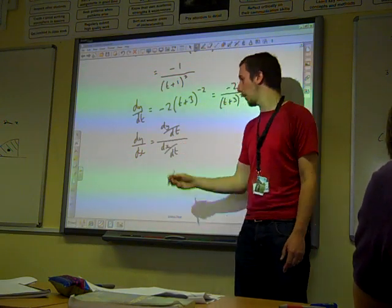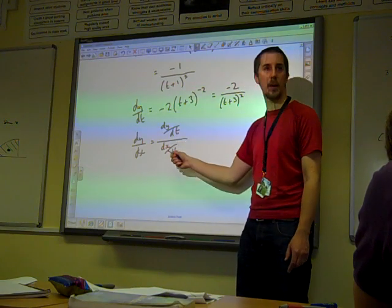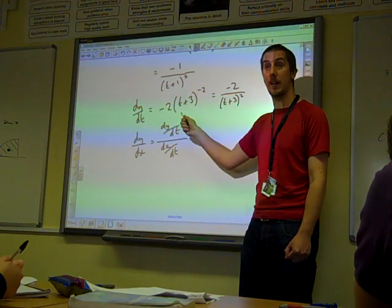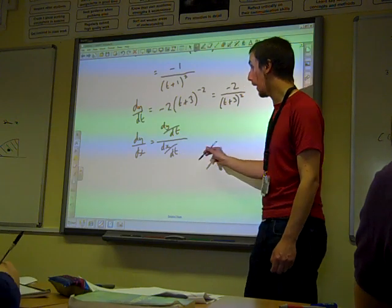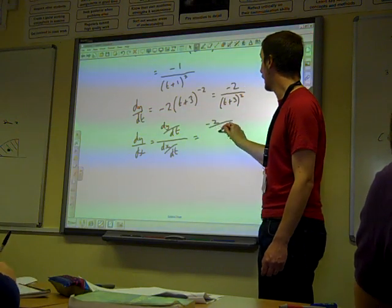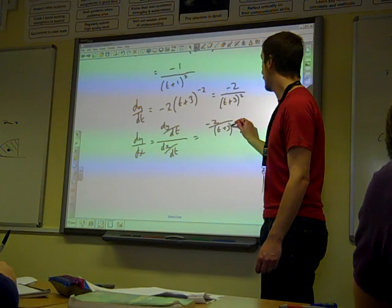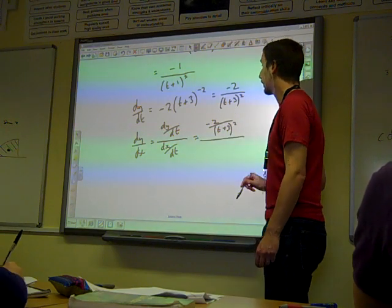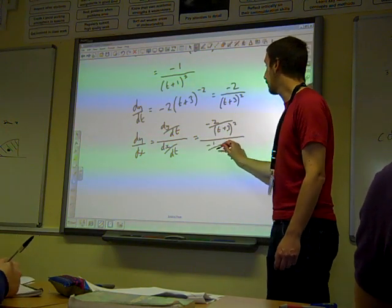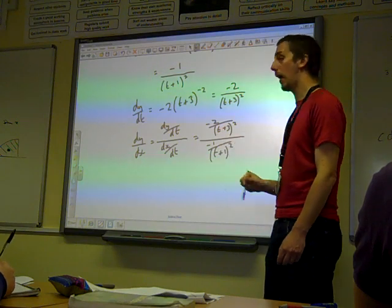dy by dx must be dy by dt divided by dx by dt. The dt bits come out to use with dy by dx. So that is minus 2 over t plus 3 squared, dy by dt, divided by minus 1 over t plus 1 squared.